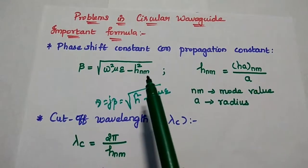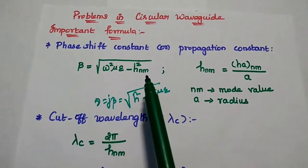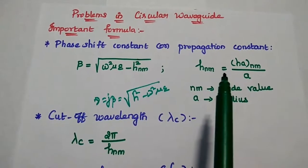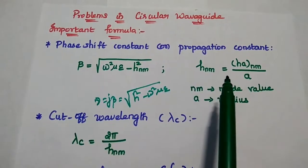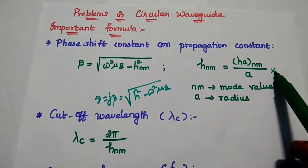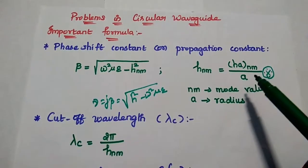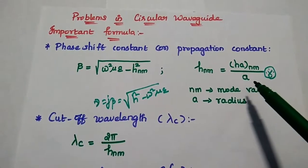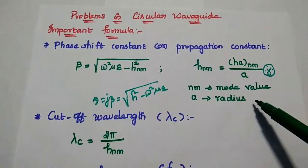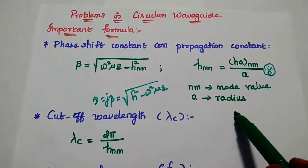h_nm represents the h value of the particular mode in the circular waveguide. It can be obtained using this formula: h_nm is equal to h'_a(nm) divided by a, where a represents the radius of the circular waveguide and nm denotes the mode value.